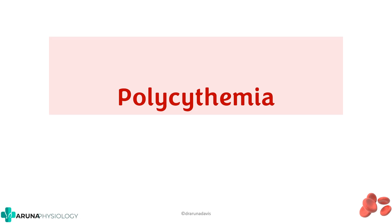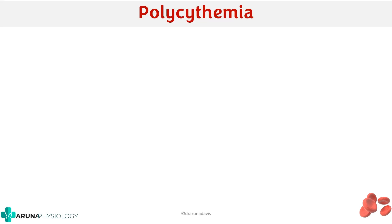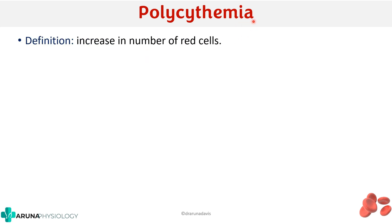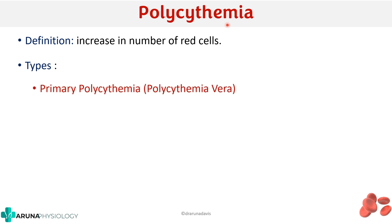In this video we need to see about polycythemia. This question can be asked either as a short essay question or as part of a structured essay question. The term poly means many, cyto stands for cell, and emia stands for blood — so there are many cells in the blood, or in other words, an increase in the number of RBCs. There are two types: primary polycythemia, also called polycythemia vera, and secondary polycythemia.